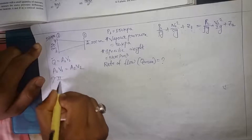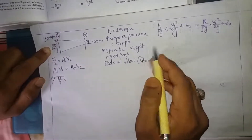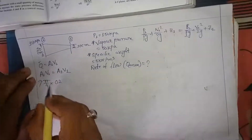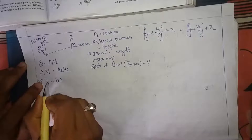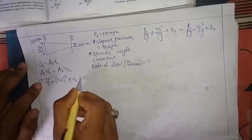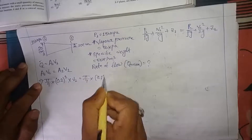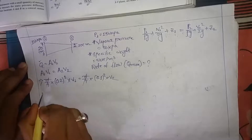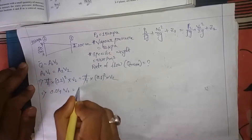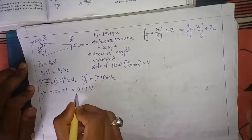From the continuity equation: (π/4)×(0.2)²×v1 = (π/4)×(0.1)²×v2. The π/4 cancels, giving 0.04·v1 = 0.01·v2, so v2 = 4v1.